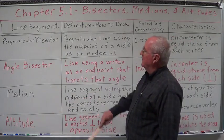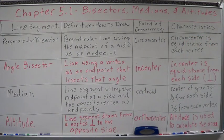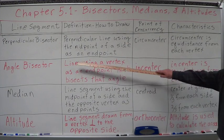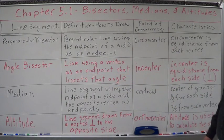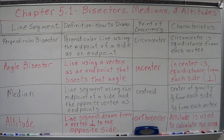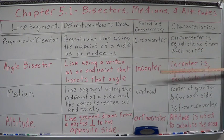Next, the angle bisector — another line segment type. It's a line using a vertex as an end point that bisects that angle. Draw the angle bisector. Its point of concurrency is called the incenter. The incenter is equal distance from each side. Notice: when we bisect the sides, we're equal distance from each vertex; when we bisect the angle, we're equal distance from each side.